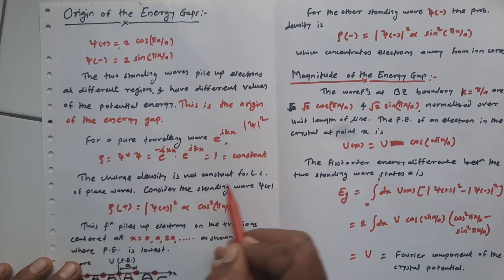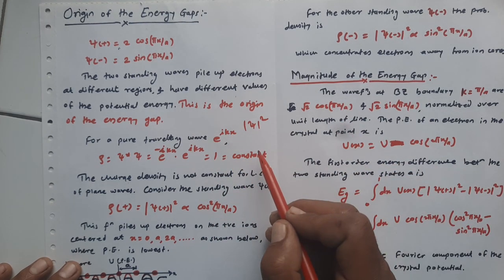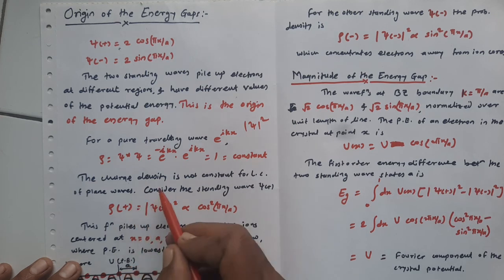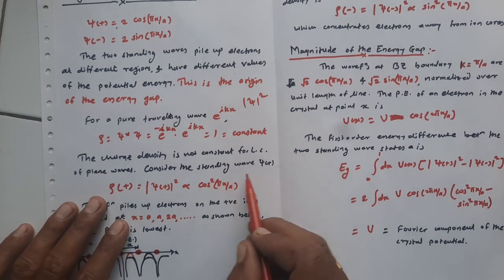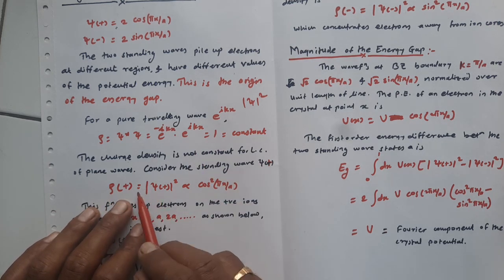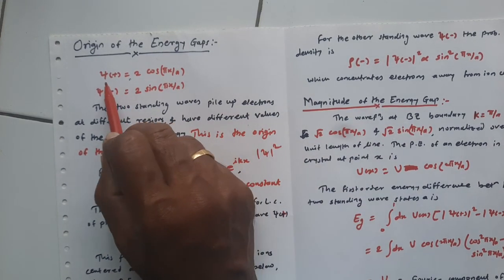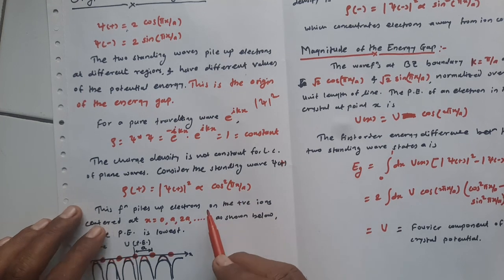The charge density is not constant for the linear combination of plane waves. e^(ikx) is a representation of a plane wave, and there is also e^(-ikx). Taking the linear combination of them gives a charge density that is not constant. For the standing wave ψ+, the corresponding probability density ρ+ equals |ψ+|², which is proportional to cos²(πx/a), since ψ+ equals two times cos(πx/a) and its complex conjugate remains the same.